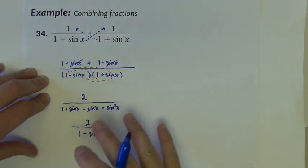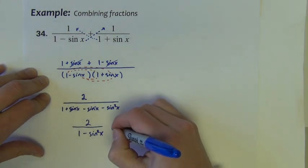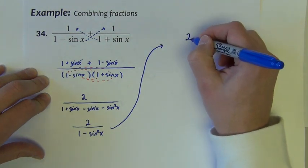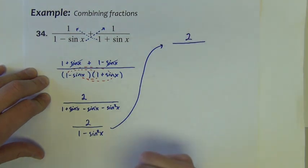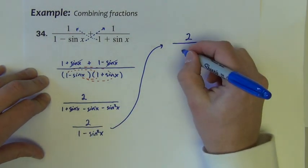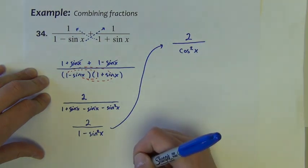So let's see, can we do any more simplifying to that? Can we take it anywhere else? So I'm going to bring this up here so we can see. 2 divided by 1 minus sine squared, well, that's a Pythagorean equivalent of cosine squared.